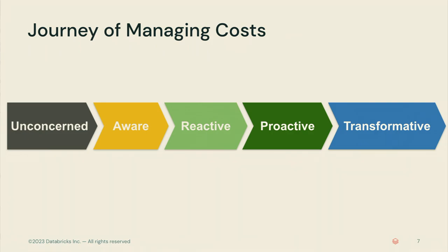Let's do a show of hands. How many are unaware that there are costs? Not a single hand. How many are aware but not doing anything? A couple. How many are reactive — doing something but maybe after the fact? Almost half the room. How many are proactive, with tagging and budgets in place? A little less. How many have completely transformed how your business works to be cost-efficient? A couple of hands — those are the real experts. My goal is that you all learn a few things and progress along this maturity curve.